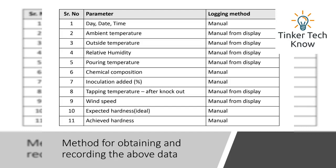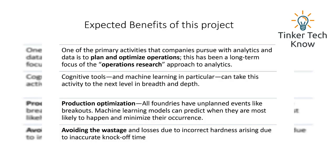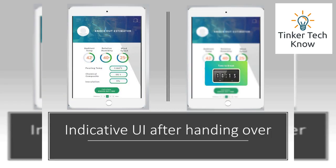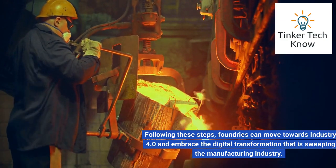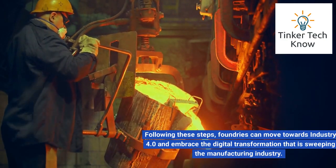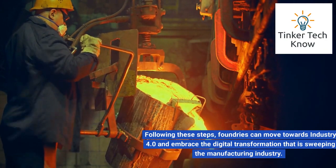The expected benefits of this project are that foundries will be able to plan and optimize their operations, unplanned events can be minimized, and wastage due to inaccurate knockout times can be avoided and improved. The last step would be to hand over a UI-based tool or dashboard giving analytics, notifications, and inputs to the operators. Following these steps, foundries can move towards Industry 4.0 and embrace the digital transformation that is sweeping the manufacturing industry.